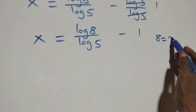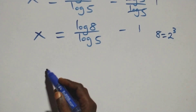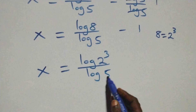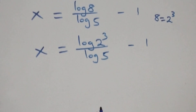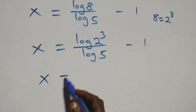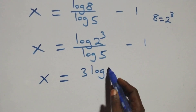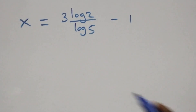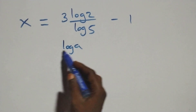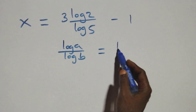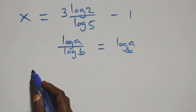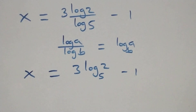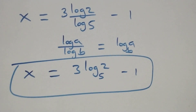Now, 8 can be written as 2 times 2 times 2, that is 2 cubed. So x equals log(2 cubed) over log 5 minus 1. Applying the power rule, 3 comes out front: x equals 3 log 2 over log 5 minus 1. Applying the change of base formula — log A over log B is the same as log A to base B — we have x equals 3 log₅2 minus 1.